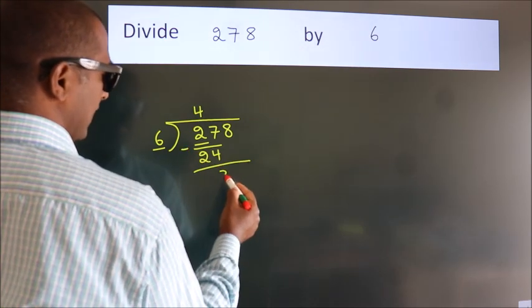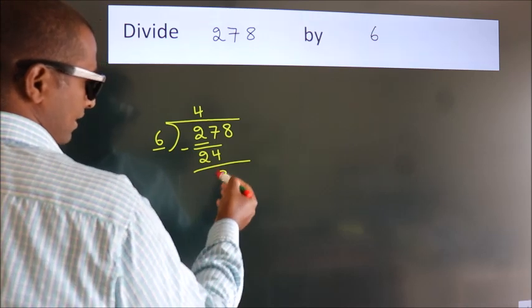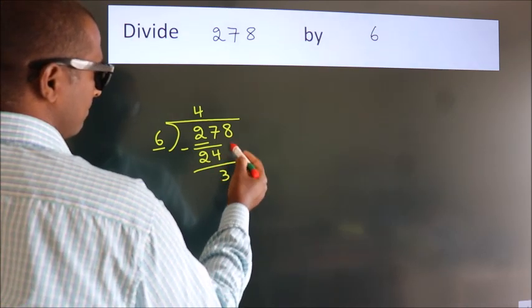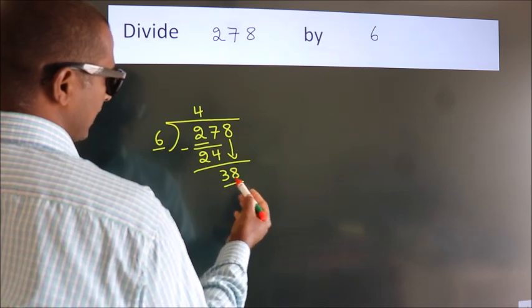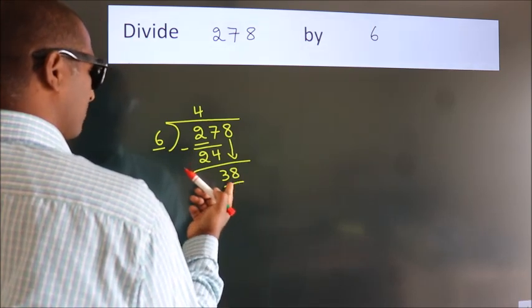subtract. We get 3. After this, bring down the number beside it, 8. So 38. A number close to